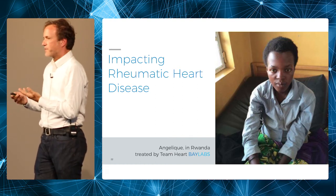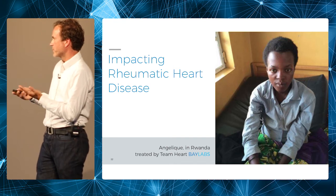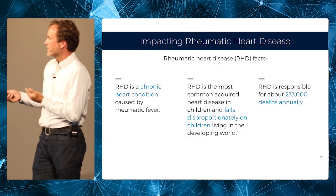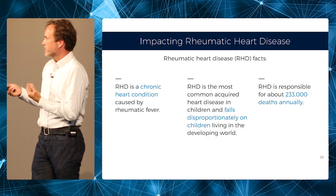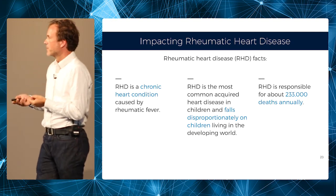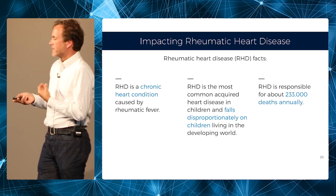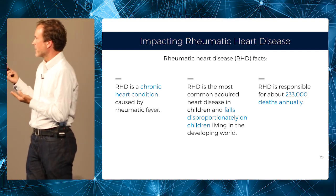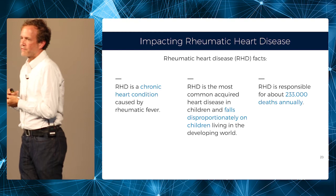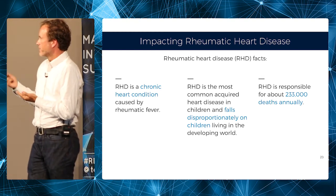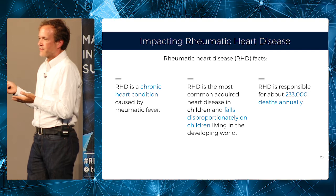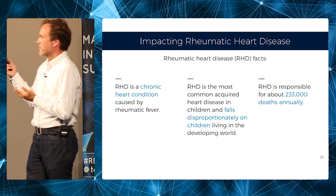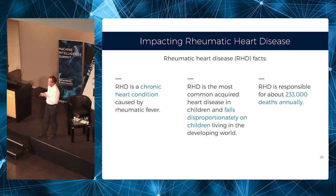It was a life-saving operation. Rheumatic heart disease is a very big problem — it's a chronic condition caused by the bacterial infection rheumatic fever. It's the most common acquired heart disease in children and affects a large number of children in the developing world. The total number of cases is larger than 15 million, and about every other minute somebody dies from this disease.